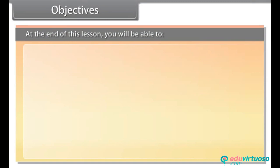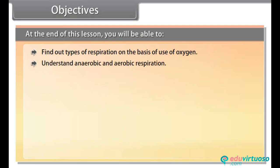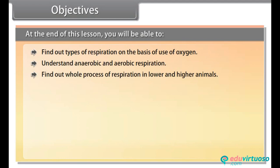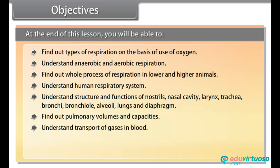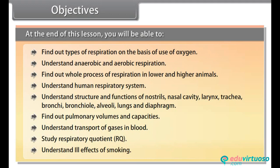Objectives: At the end of this lesson you will be able to find out types of respiration on the basis of use of oxygen, understand anaerobic and aerobic respiration, find out the whole process of respiration in lower and higher animals, understand the human respiratory system, understand structure and functions of nostrils and nasal cavity, find out pulmonary volumes and capacities, understand transport of gases in blood, study respiratory quotient (RQ), and understand ill effects of smoking.